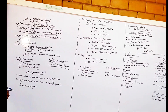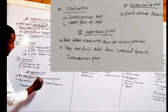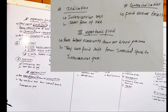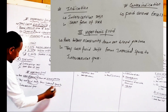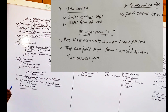The third type is hypertonic fluid. Hypertonic fluid has a higher osmolarity concentration than blood plasma. Because of this higher osmolarity, it causes a fluid shift from the interstitial space into the intravascular space.